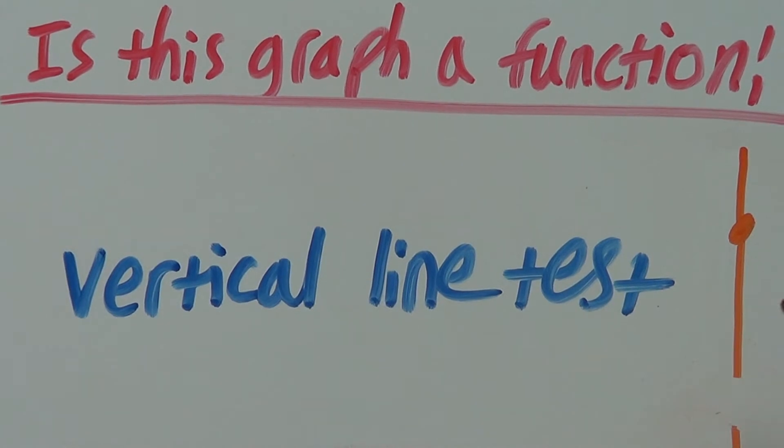But if this vertical line only has one intersection, that graph is a function. We'll look at a few examples as that's the best way to see how this works.